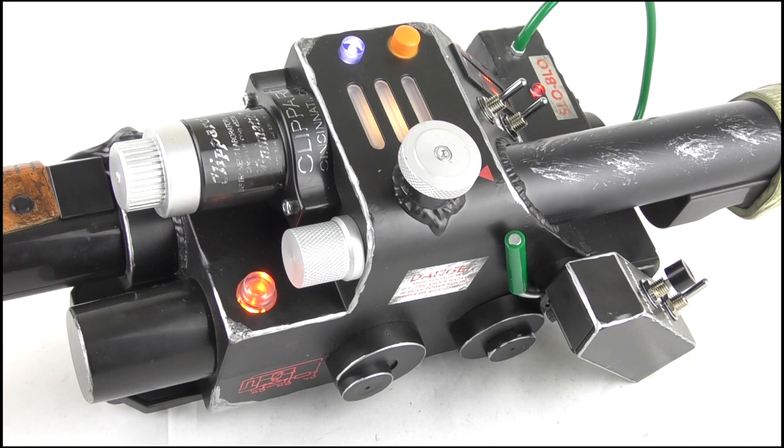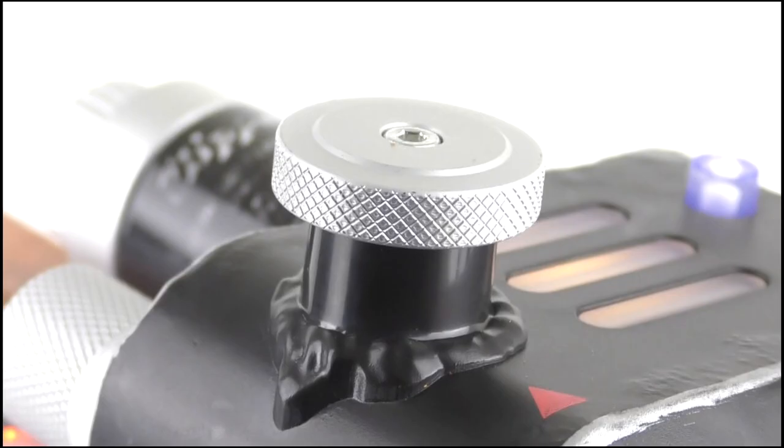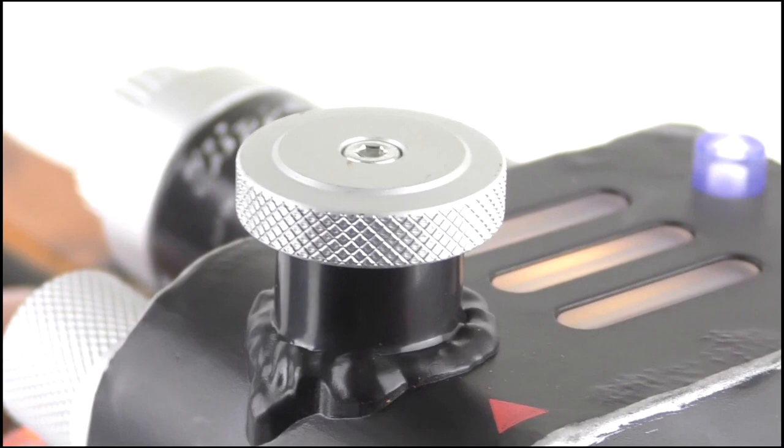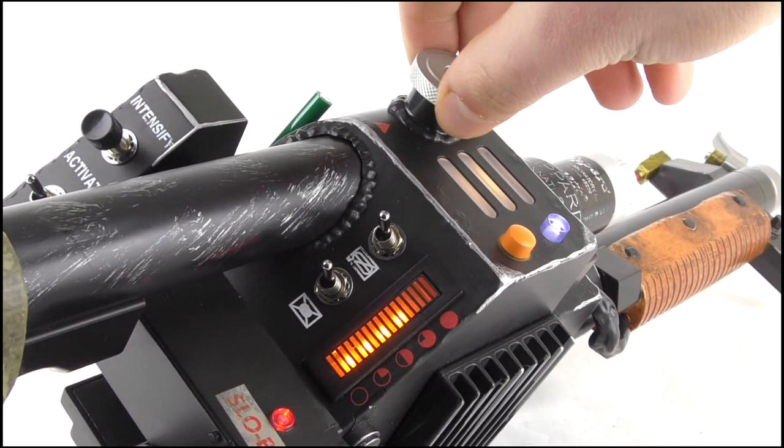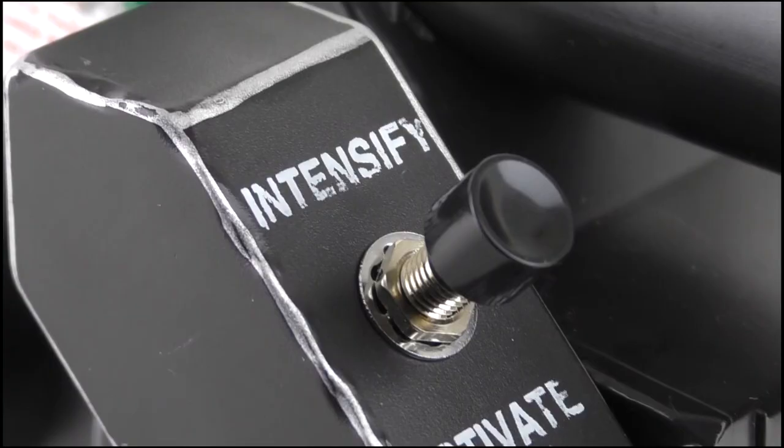Rotating the intensity adjuster actually works, making the thrower vibrate more or less depending on which way it's turned, with an accompanying rising or lowering of the humming sound. Finally, to fire the proton stream, hit the intensify button.